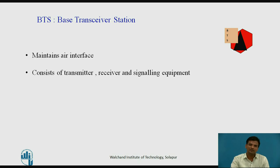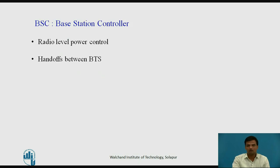BTS – Base Transceiver Station: The BTS used in a GSM network comprises the radio transmitter, receiver, and their associated antennas that transmit and receive to directly communicate with the mobiles. The BTS is the defining element for each cell. The base transceiver station communicates with the mobiles, and the interface between the two is known as the UM interface with the associated protocols.